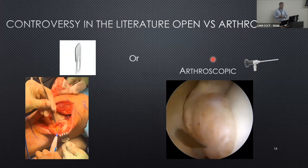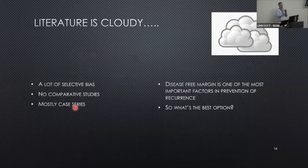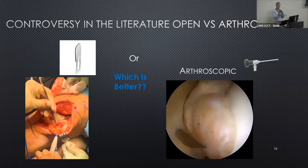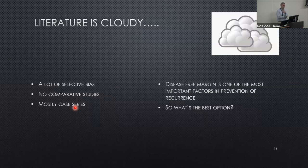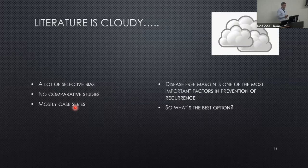On one side is what an open synovectomy looks like — a big incision down the front of the joint where all the abnormal PVNS tissue is cleared out. Or is arthroscopic better, where you use tiny incisions but have to see and remove all abnormal tissue looking through a keyhole instead of opening the door? Which approach is better? It's cloudy — there's a lot of selection bias in the literature, no head-to-head studies. It's almost retrospective: if you get an arthroscopic synovectomy and it doesn't come back, that was the right choice. But we can't predict that prospectively.